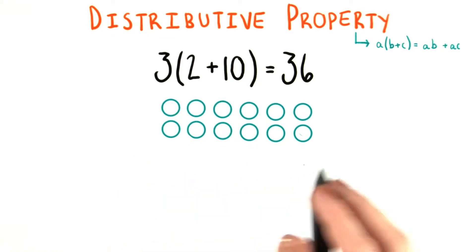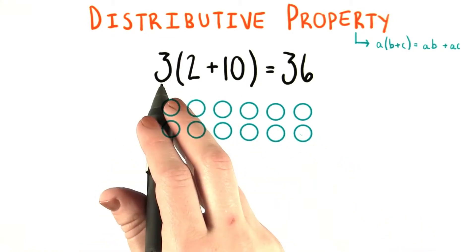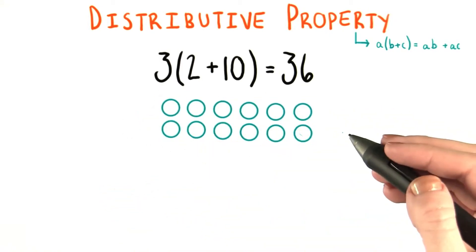Great, so now we have 12 circles in one big group. And then the next thing we want to do is multiply this group by 3. So that means we want 3 sets of this group of circles.